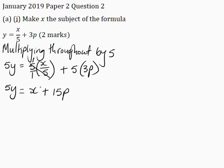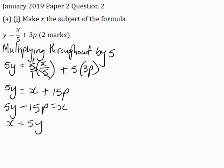Now I want to make x the subject of the formula, so I need to take 15p to the left hand side of the equation. This becomes 5y minus 15p is equal to x. Switching this equation around, x is equal to 5y minus 15p.